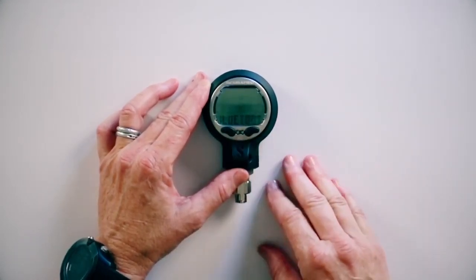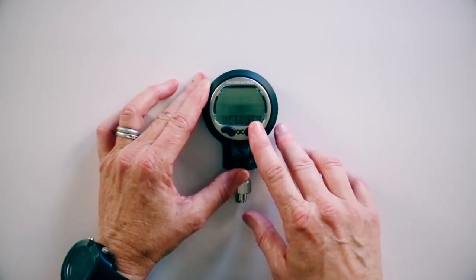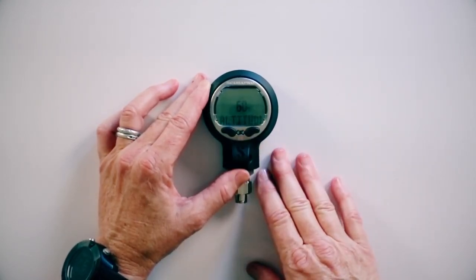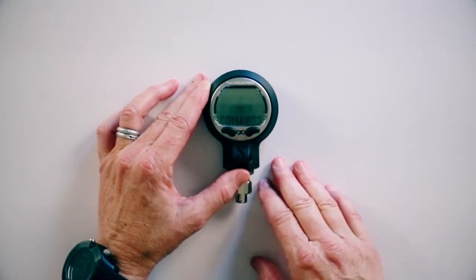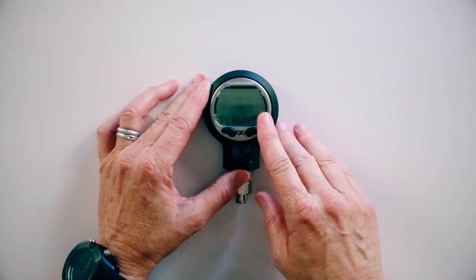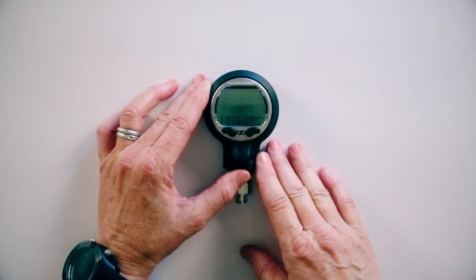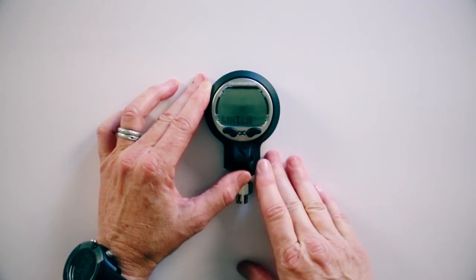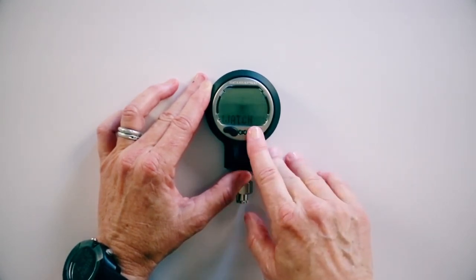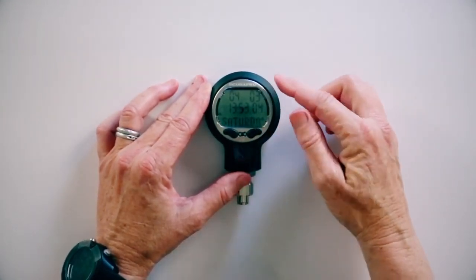Our first function is Bluetooth. We're going to deal with that on another video. We're going to go forward again, and you have your altitude, compass, dive planner, logbook, the time, and then the watch. Now we're back at the home screen with the date and the time.